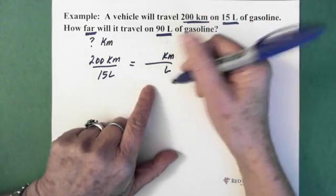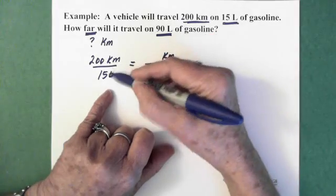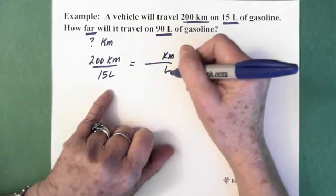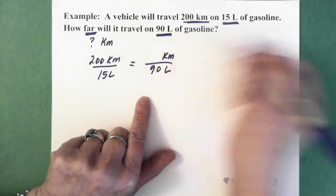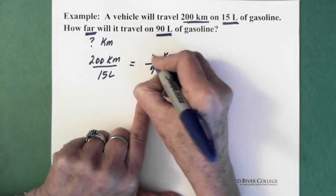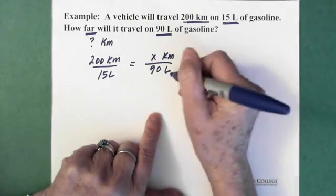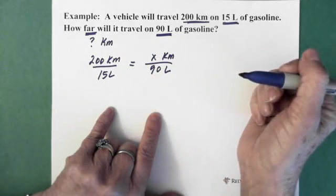And the truth is, you can also set it up in a different way, but it just makes sense to set it up this way. Kilometers over liters, kilometers over liters. On this side we know that we have 90 liters. And the unknown is the kilometers that we're going to travel in the 90 liters. So then here is your proportion.